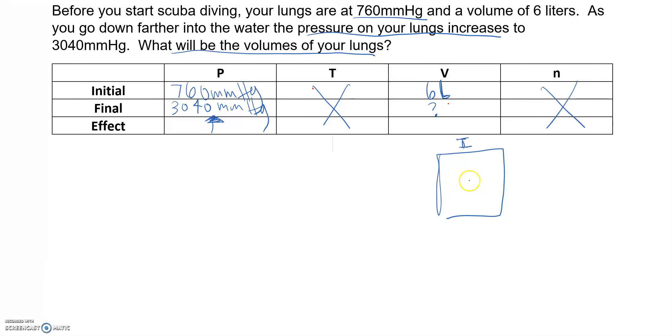If we want pressure to increase, there's a couple ways we could do it. We could increase the temperature, but that's not possible because temperature is constant. We could increase number of particles, but that's also constant. So really the only other way to increase the pressure is to decrease the volume.